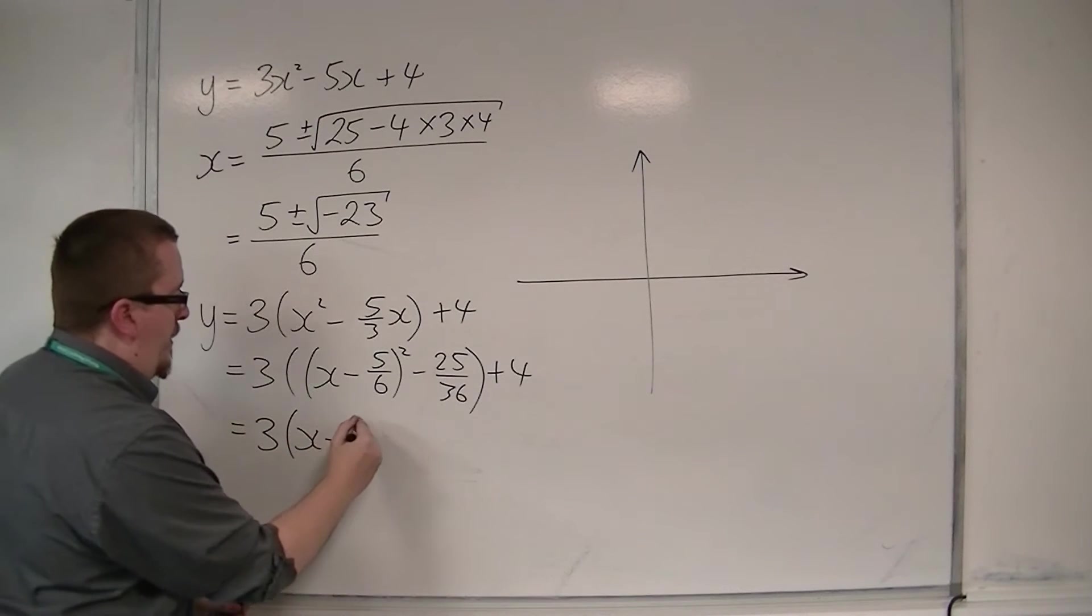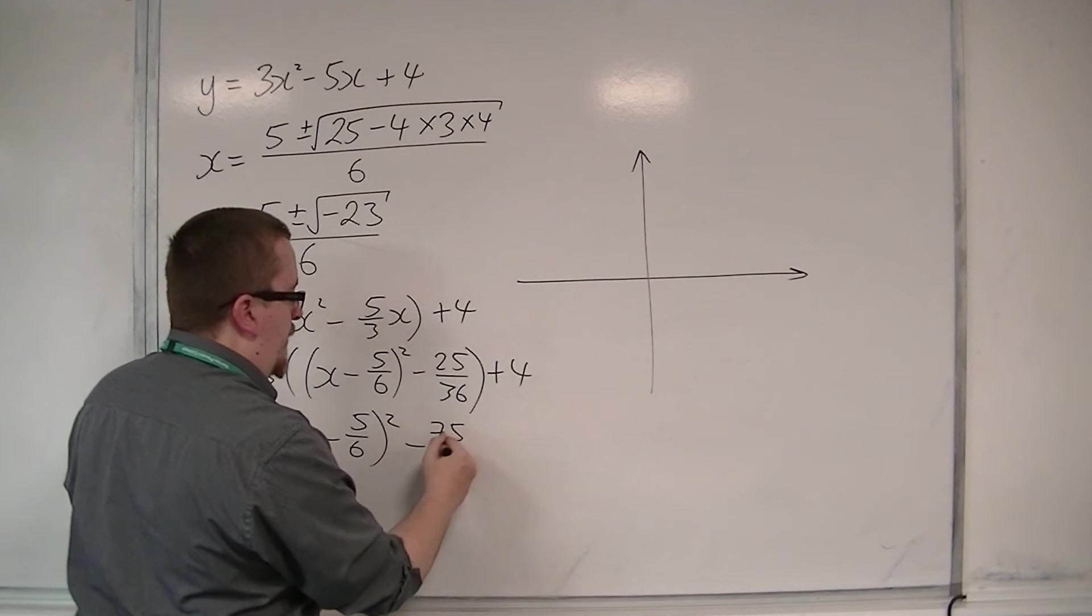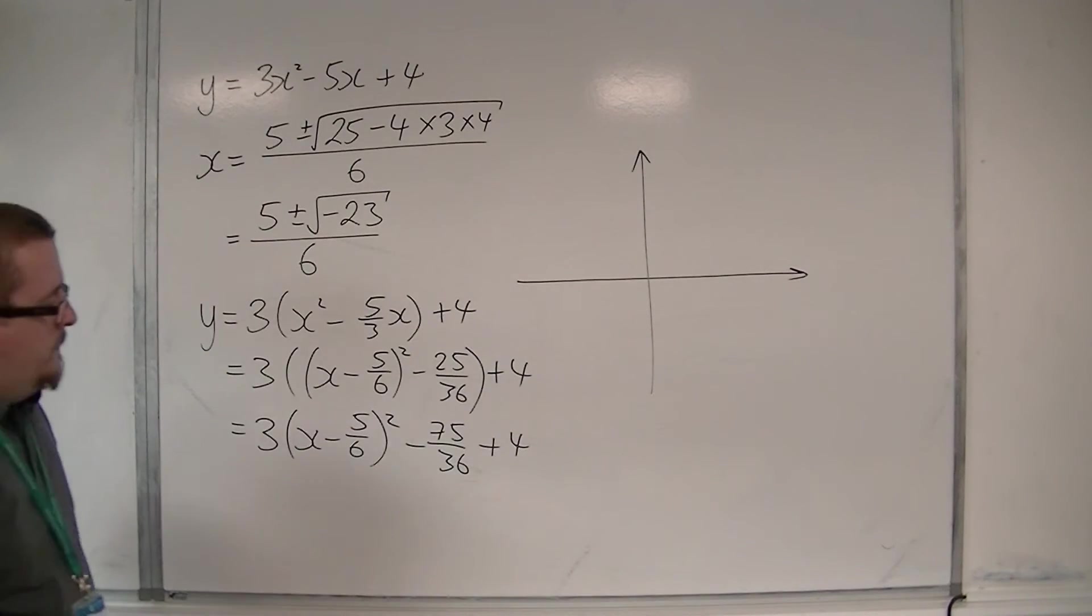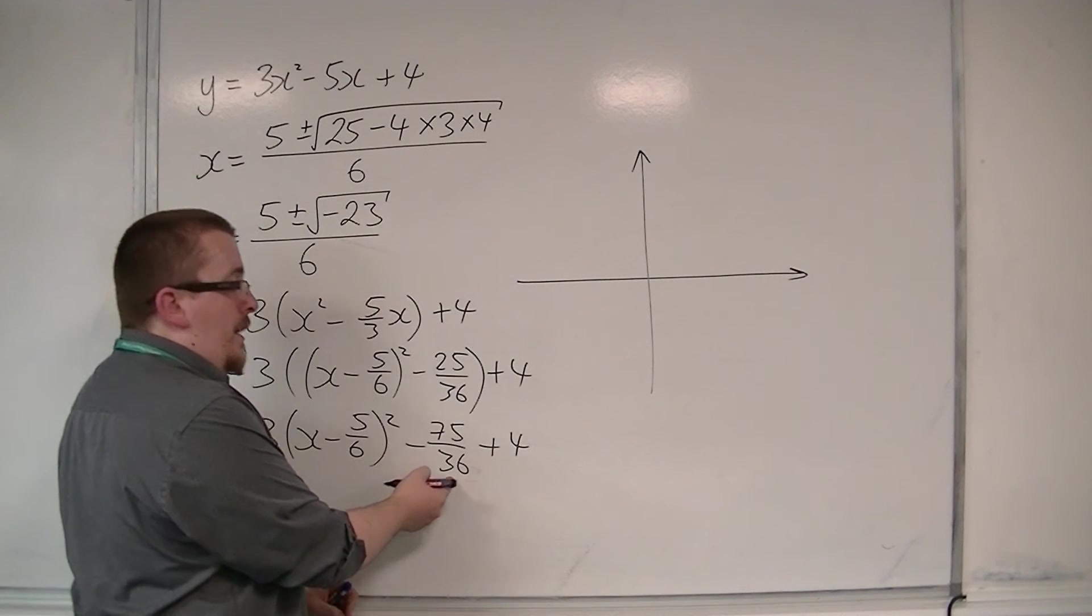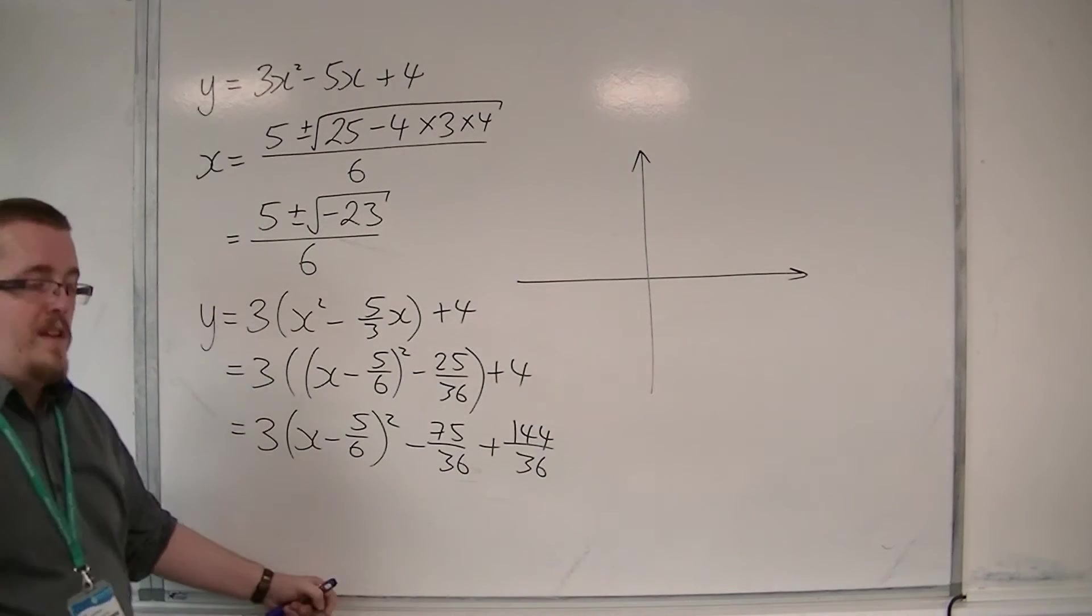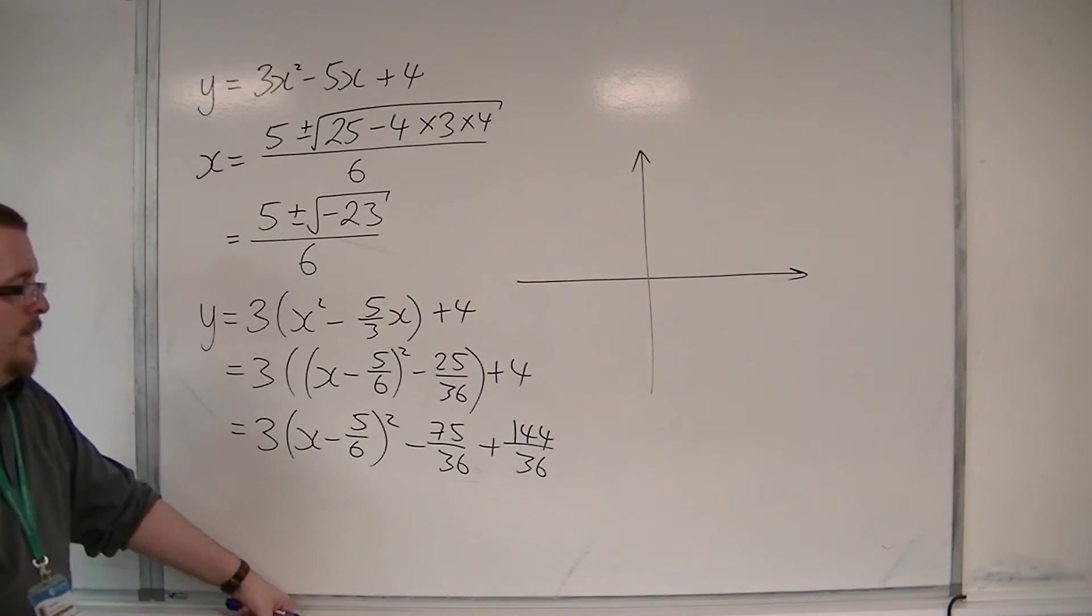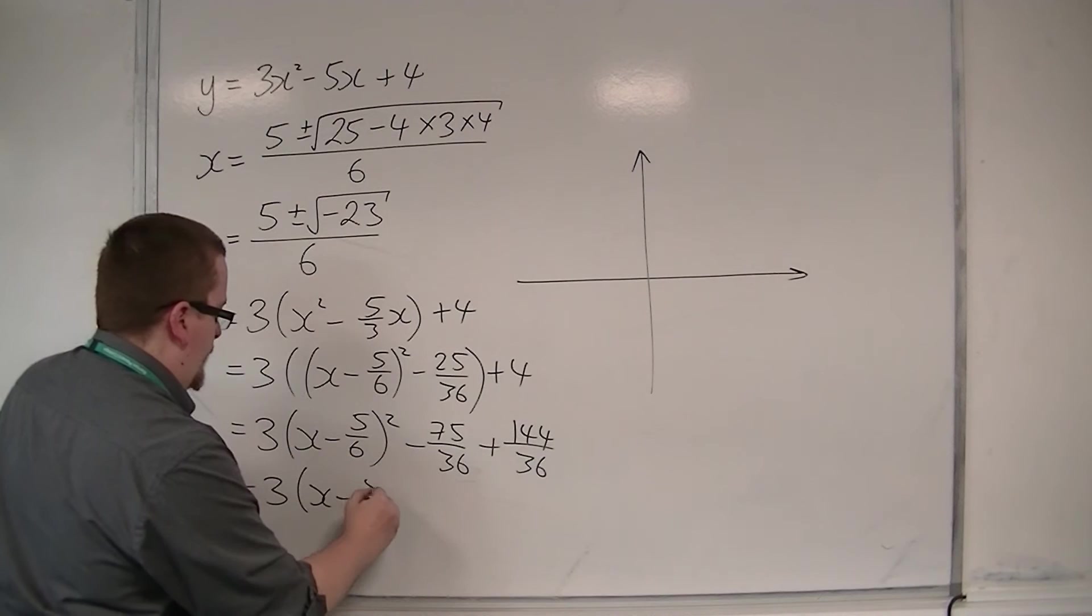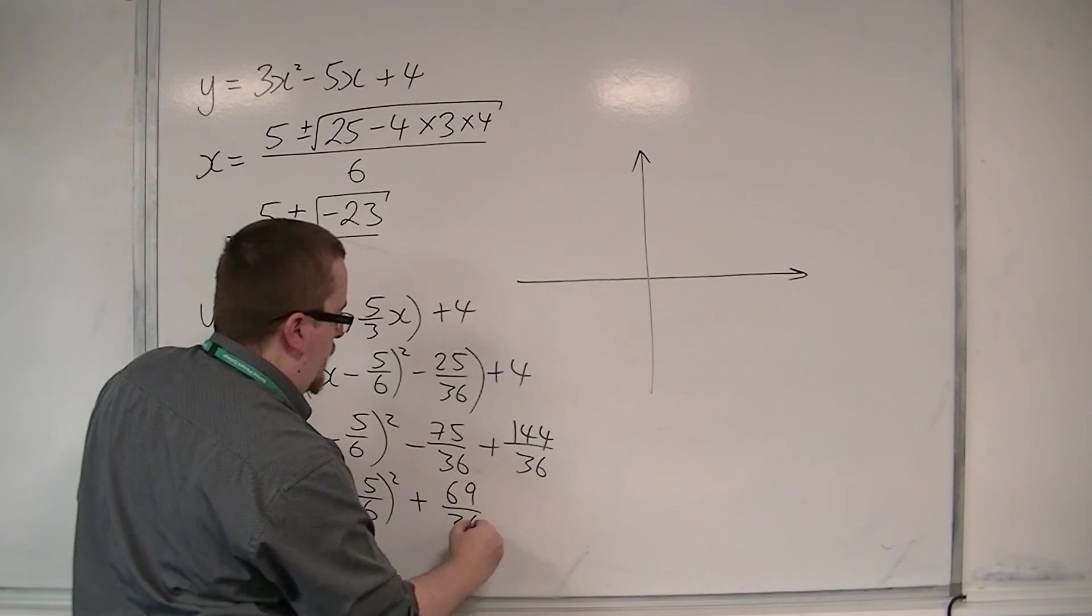This is equal to 3 lots of x minus 5 sixths squared, multiply the 3 by this term, so minus 75 over 36, we've got that plus 4 still on the outside. Now I'm going to rewrite the 4 in 36ths, so that's 144 over 36, so 4 lots of 36 is 144. So 144 take away 75 is 69.